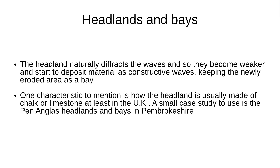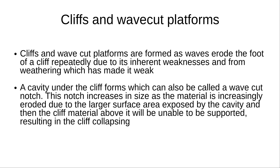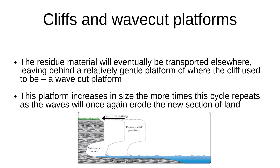A small case study to use is the Penanglis headlands and bays in Pembrokeshire. Cliffs and wavecut platforms are formed as waves erode the foot of a cliff repeatedly due to its inherent weaknesses and from weathering which has made it weak. A cavity under the cliff forms, which can also be called a wavecut notch. This notch increases in size as the material is increasingly eroded due to the larger surface area exposed by the cavity, and then the cliff material above it will be unable to be supported, resulting in the cliff collapsing. The residue material will eventually be transported elsewhere, leaving behind a relatively gentle platform of where the cliff used to be — a wavecut platform.